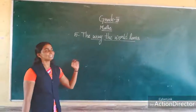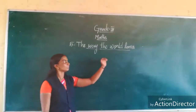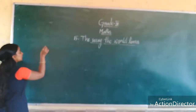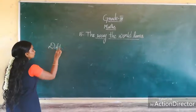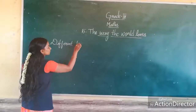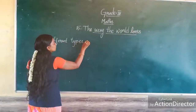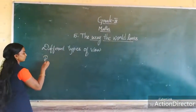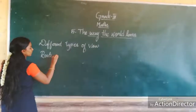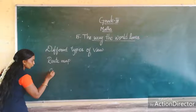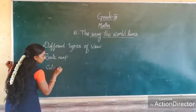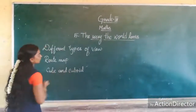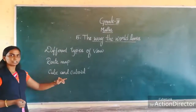Hi students, today we are going to see the next lesson. What is lesson 8? The way the world looks. In this lesson, we are going to see three things: the different types of view, root knife, and cube and cube one.